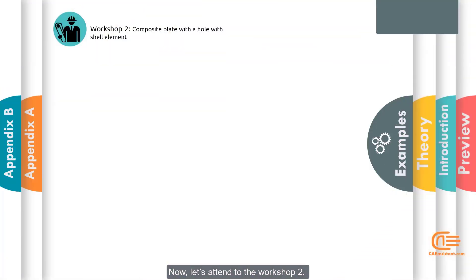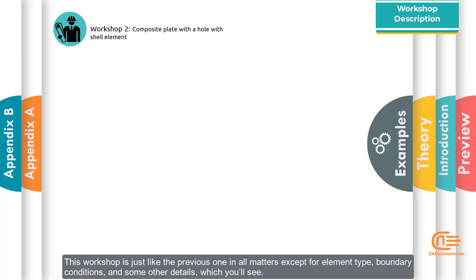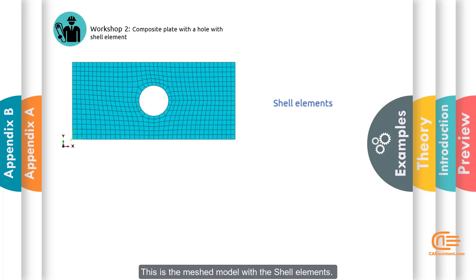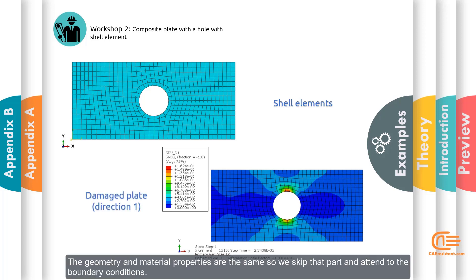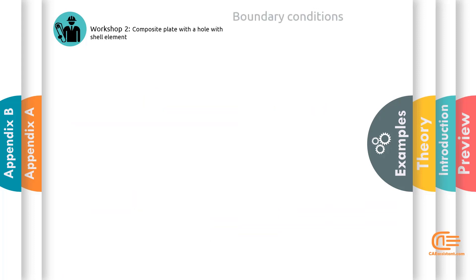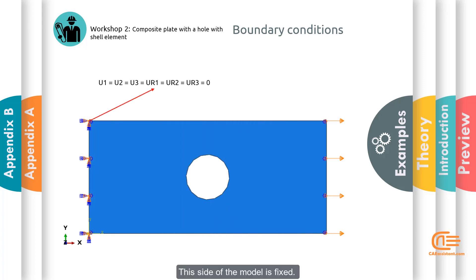Now let's attend to workshop 2. This workshop is just like the previous one in all matters except for element type, boundary conditions, and some other details which you'll see. This is the mesh model with the shell elements. And this is the model when it is damaged in direction 1. The geometry and material properties are the same, so we skip that part and attend to the boundary conditions. This side of the model is fixed. In the initial step, the other side has this condition. But when the simulation starts, it becomes like this. Now let's get to the software.